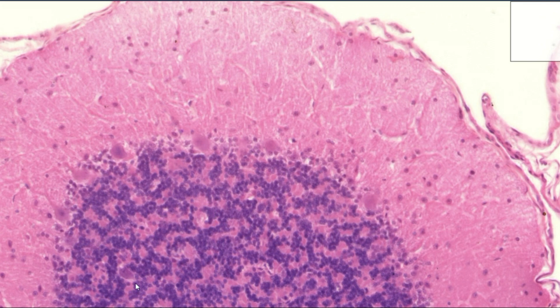In this photo we can see a quite large perikaryon between the granular cells — this would be a Golgi cell. It is quite irregular and quite a large cell.